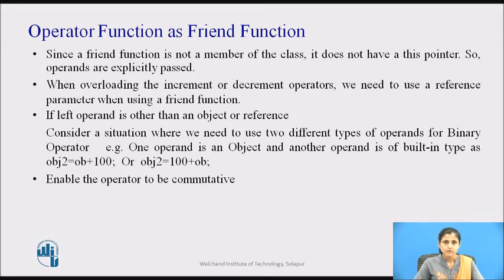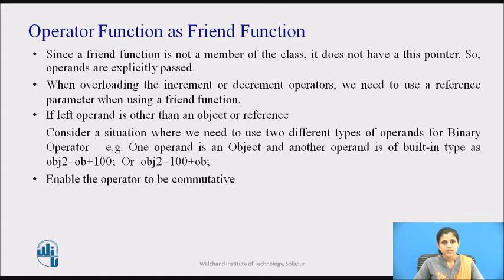But to always position the object on the left could be a significant burden. The solution to this problem is to overload addition using a friend — do not use a member function in such cases. Friend functions permit operators to be commutative. An operator is commutative if the result is the same regardless of the order of its operands. Examples are addition, multiplication, etc.